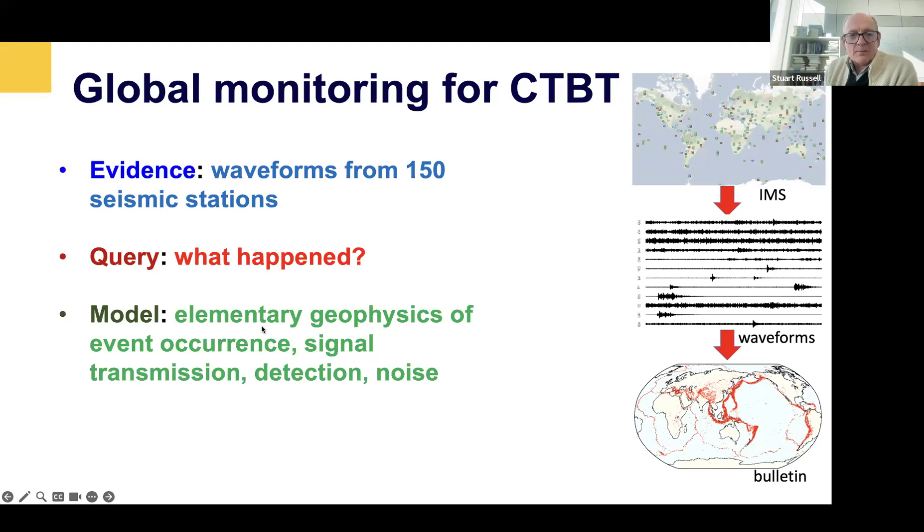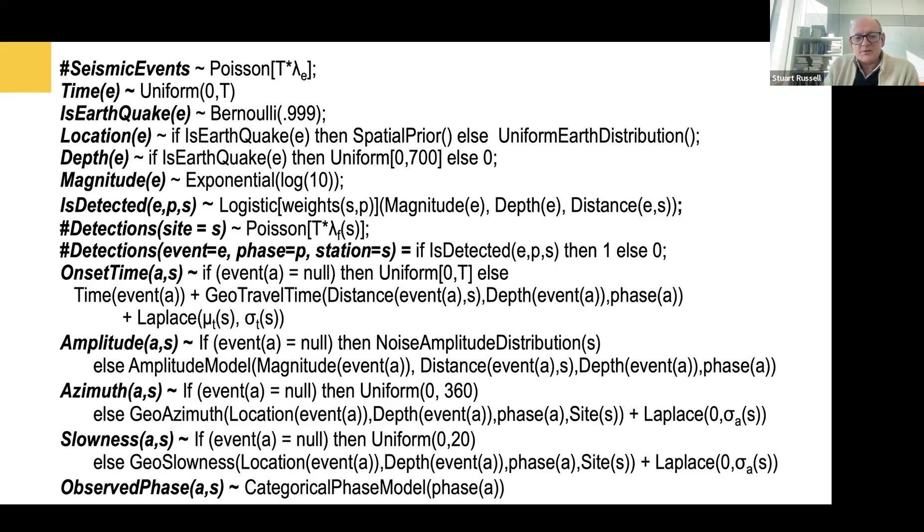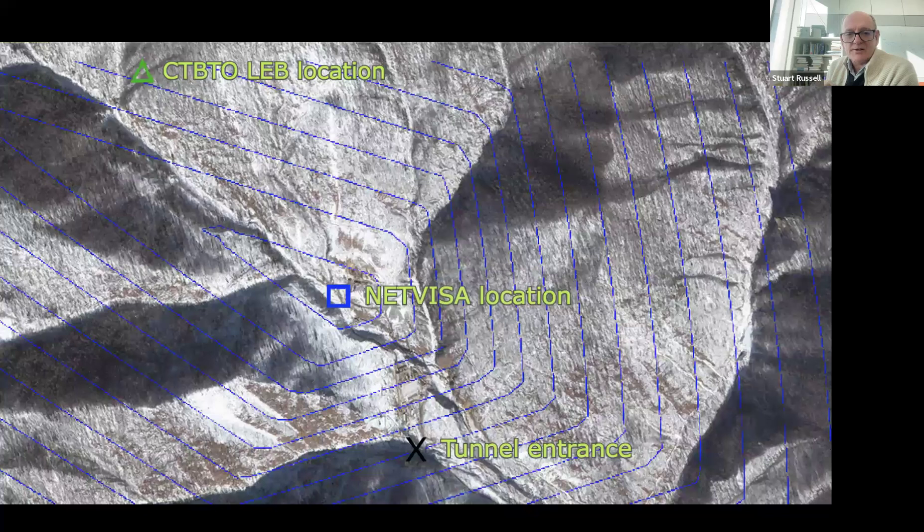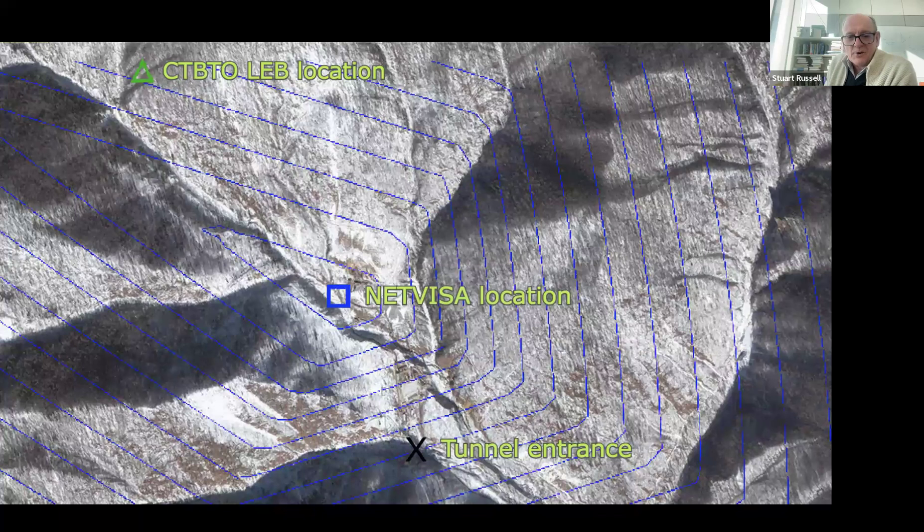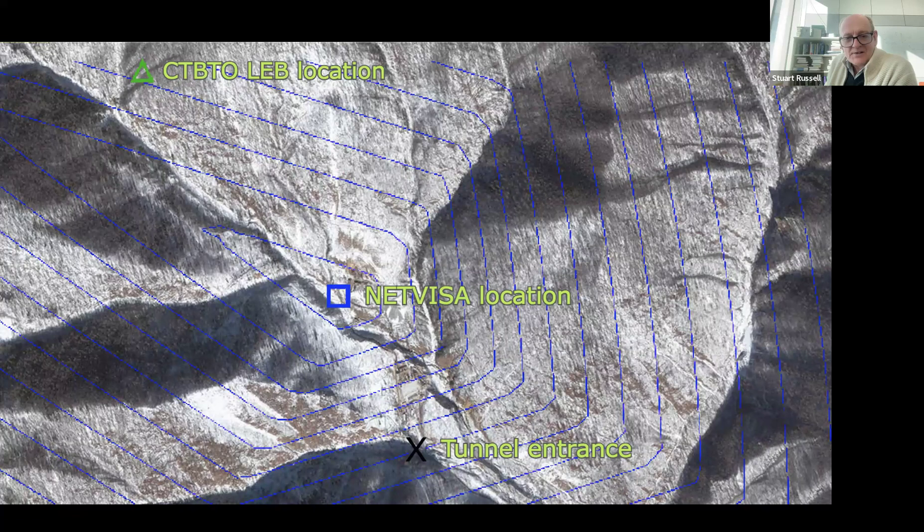In about 2009, I attended a meeting at Livermore where they explained this problem. And in about half an hour, using one of these probabilistic programming languages, I was able to write down the model. And here it is. This is the monitoring system for the nuclear test ban treaty. And it works about two to three times better than the previous system. Here's the detection of a nuclear explosion in North Korea, where our estimated location was more than twice as close to the actual location. And it's now running 24 seven at the UN in Vienna.